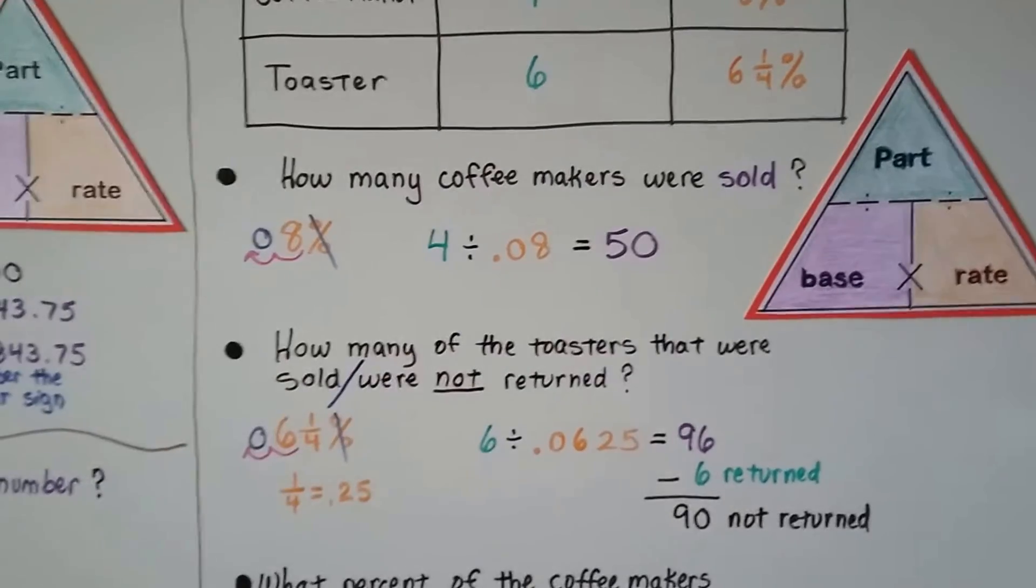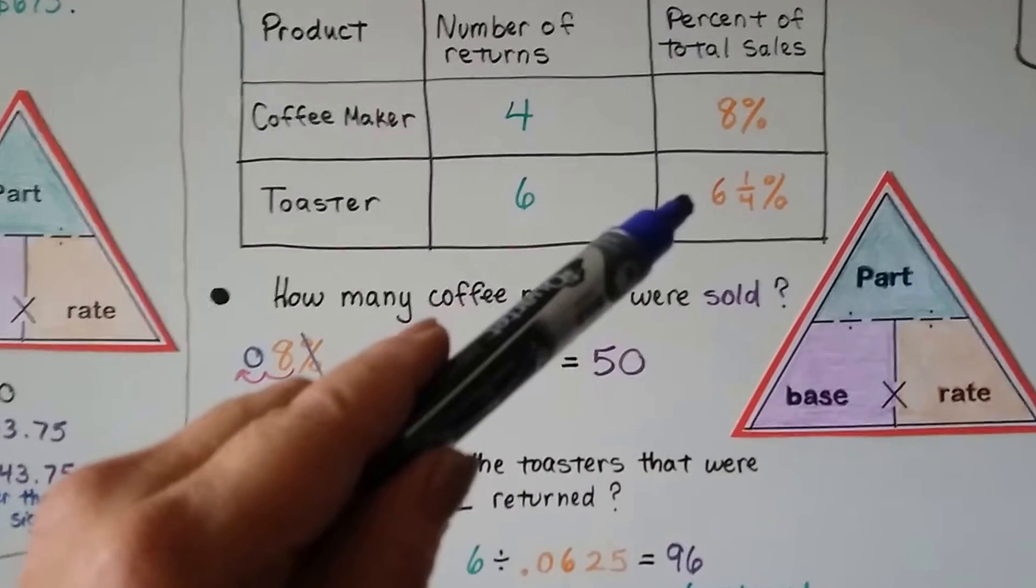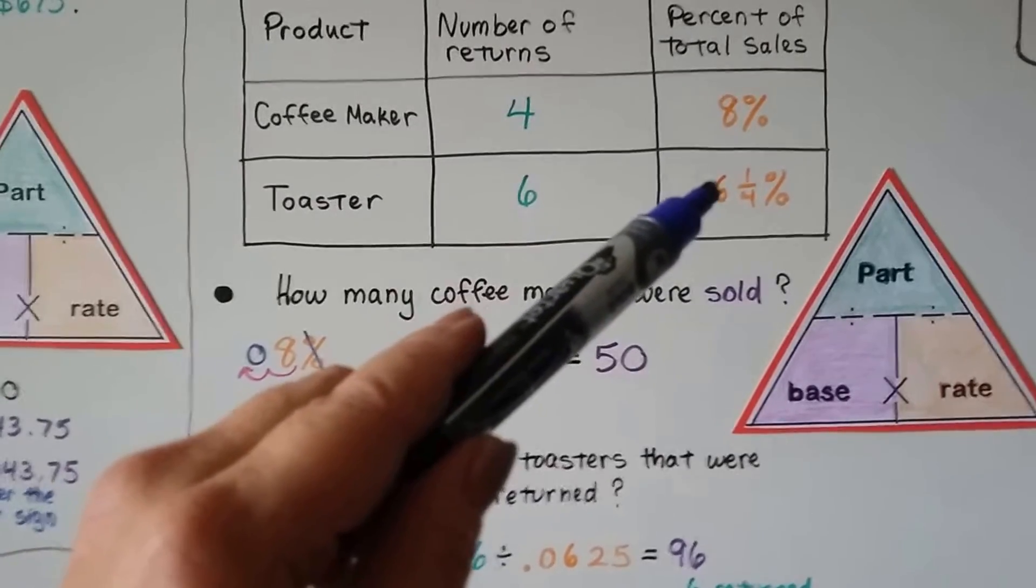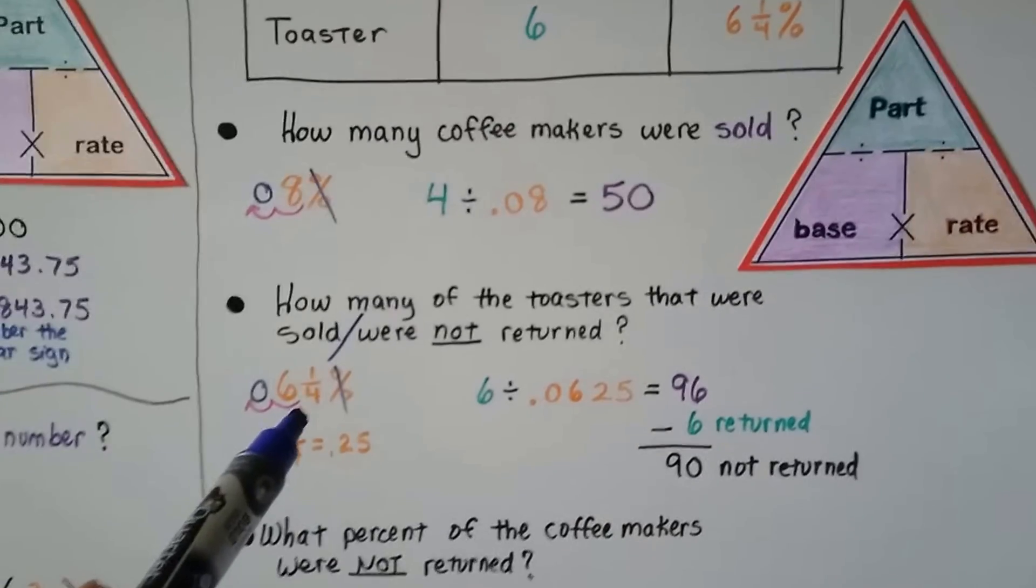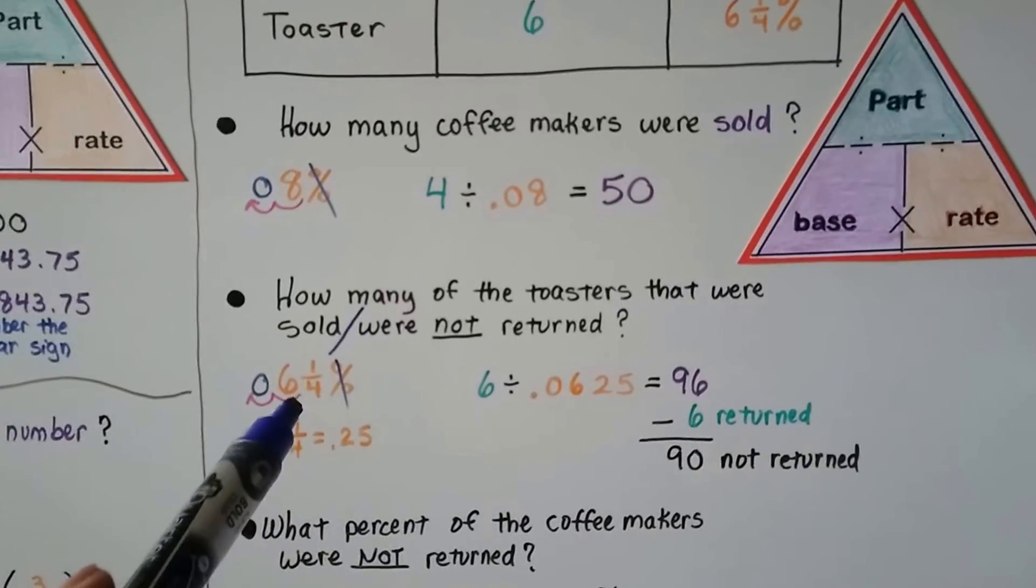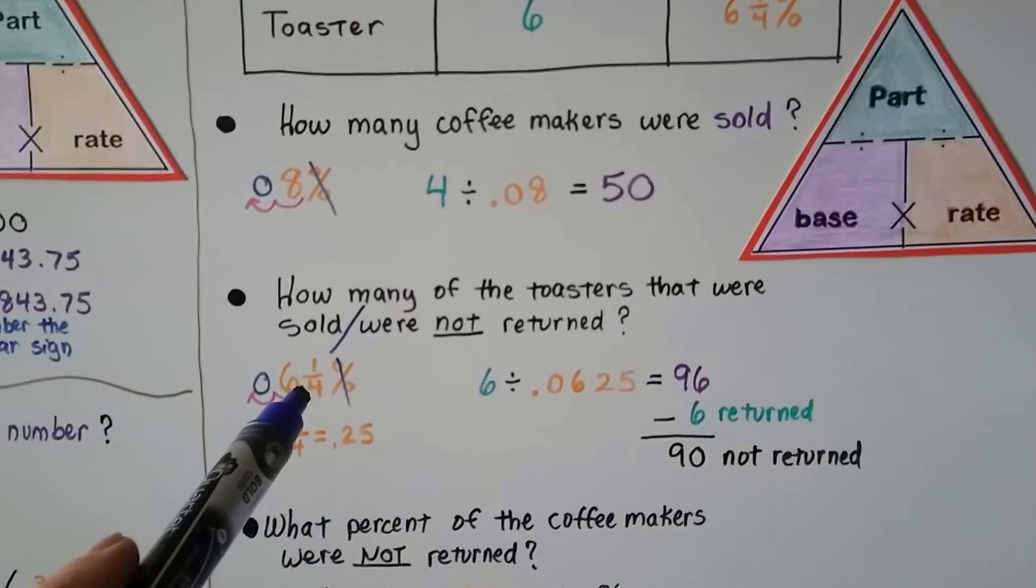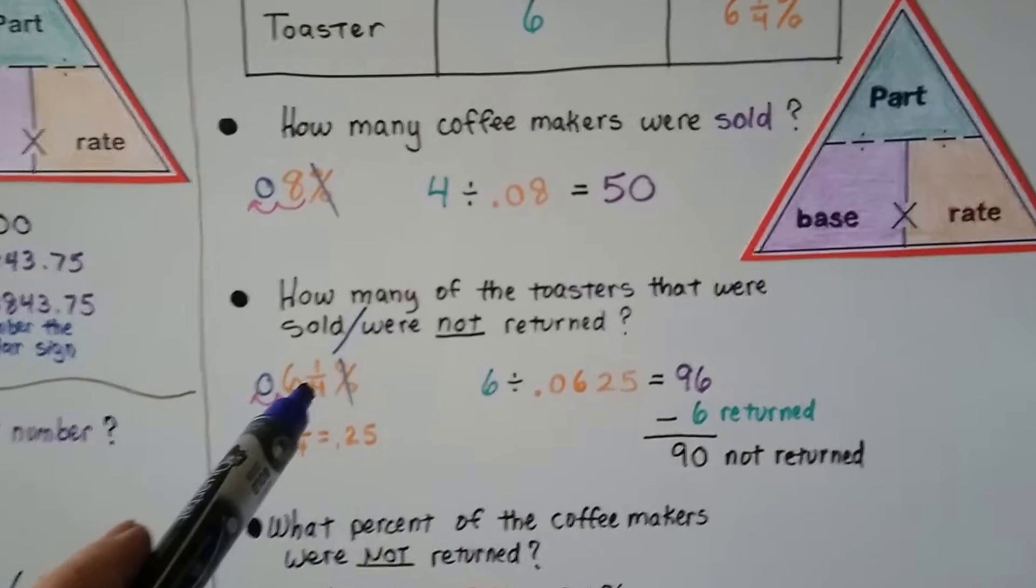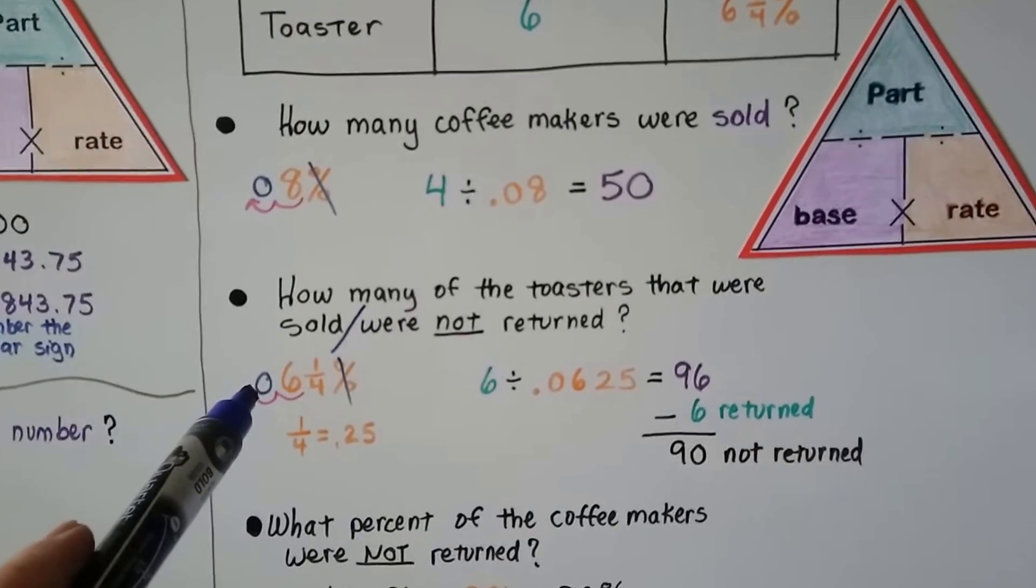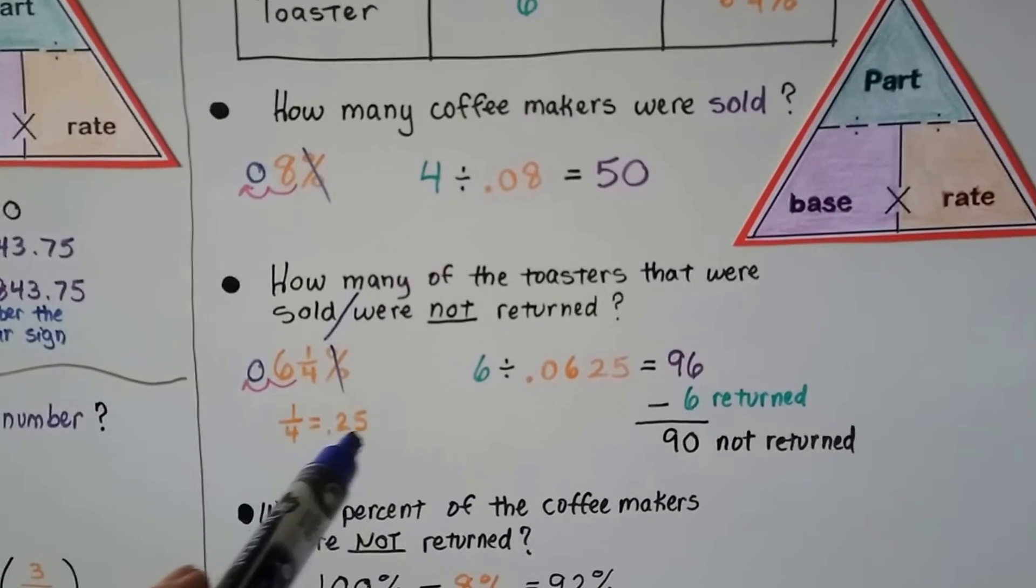We've got six returns and that's a total of six and one-fourth percent of the sales. We turn this into a decimal. One-fourth is .25. And we don't see the decimal in between the six and the one-fourth fraction, but it's there. It's invisible. We're going to move it one, two hops over. So we have a .0625.